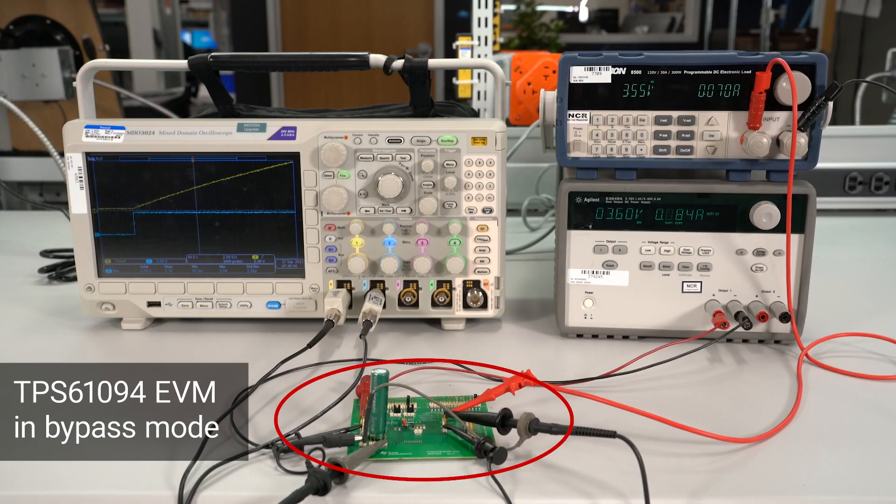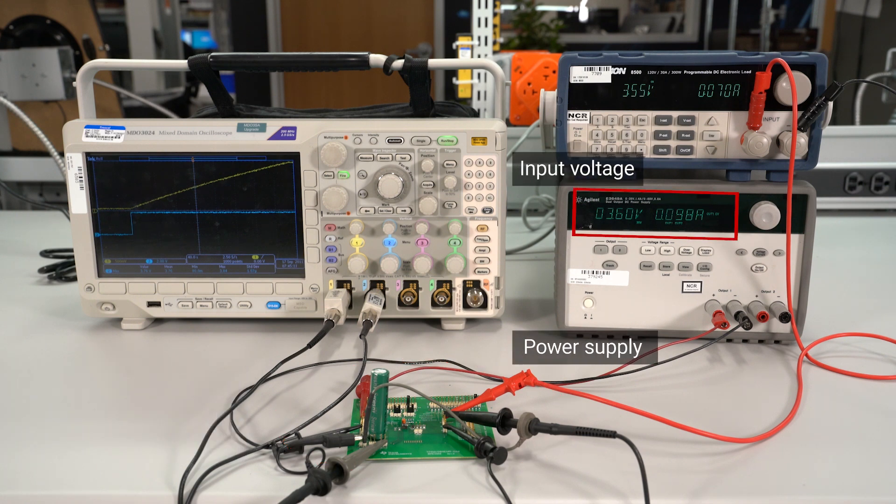Here we have the TPS61094 evaluation module working in bypass mode. As we can see, there is no ripple on the output since the device is not switching.